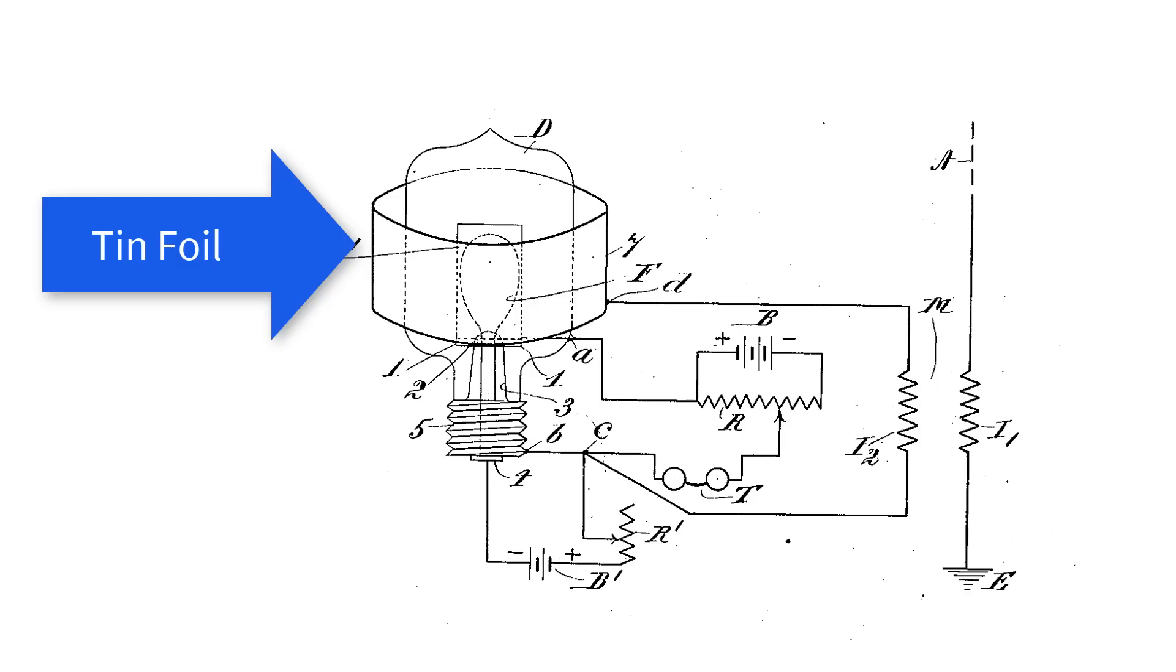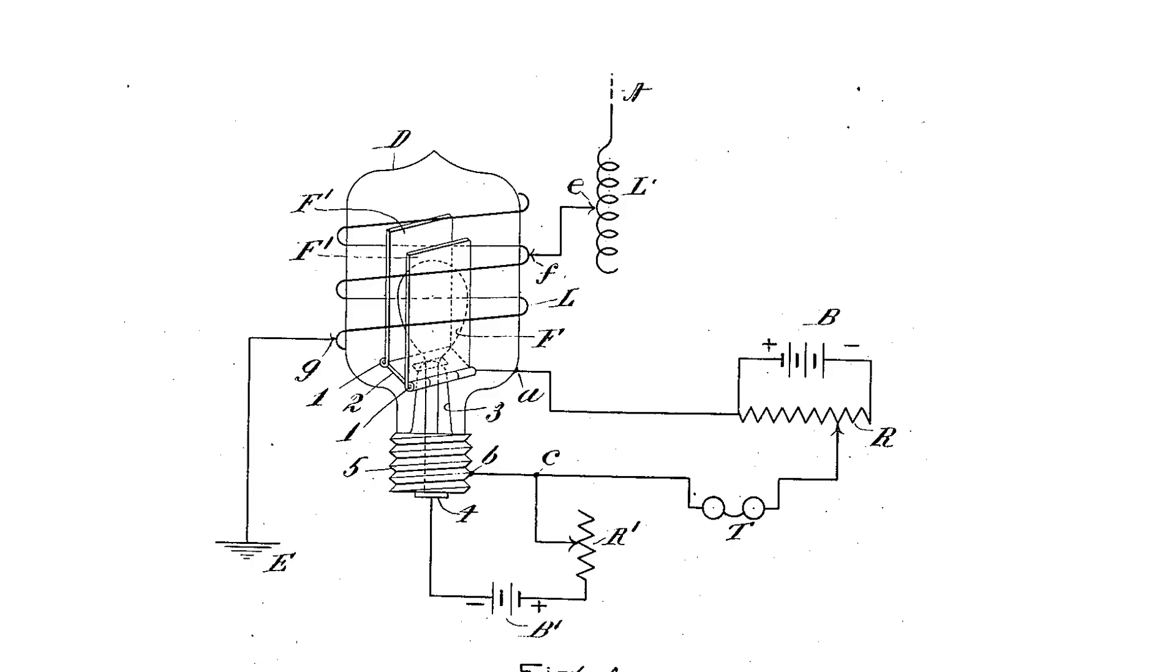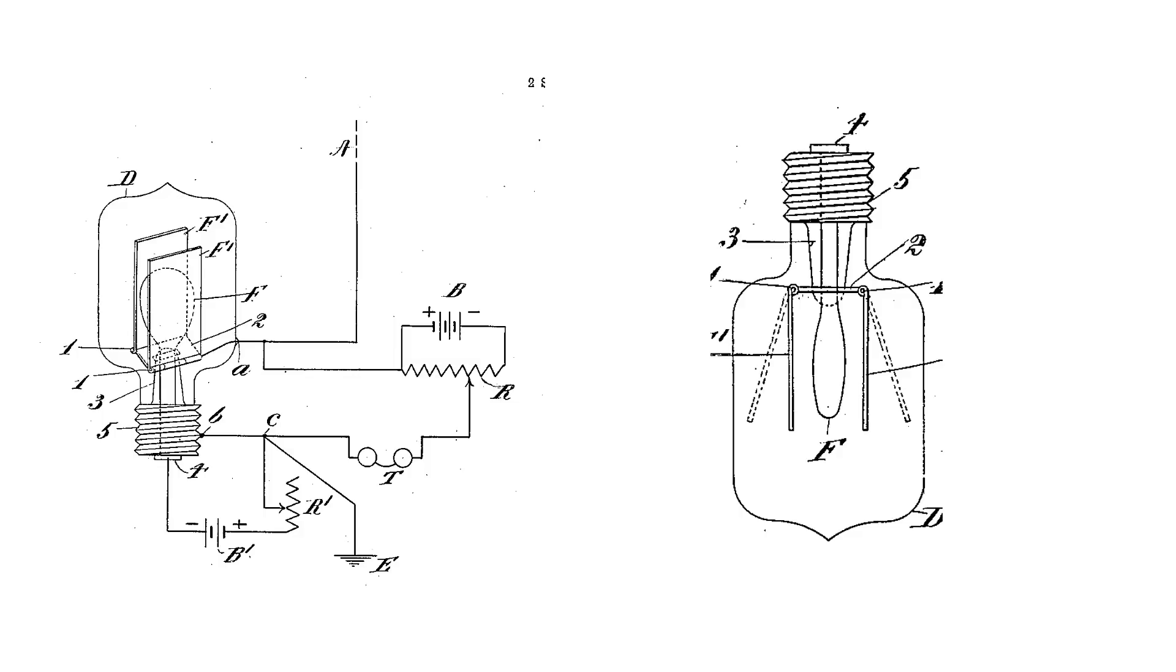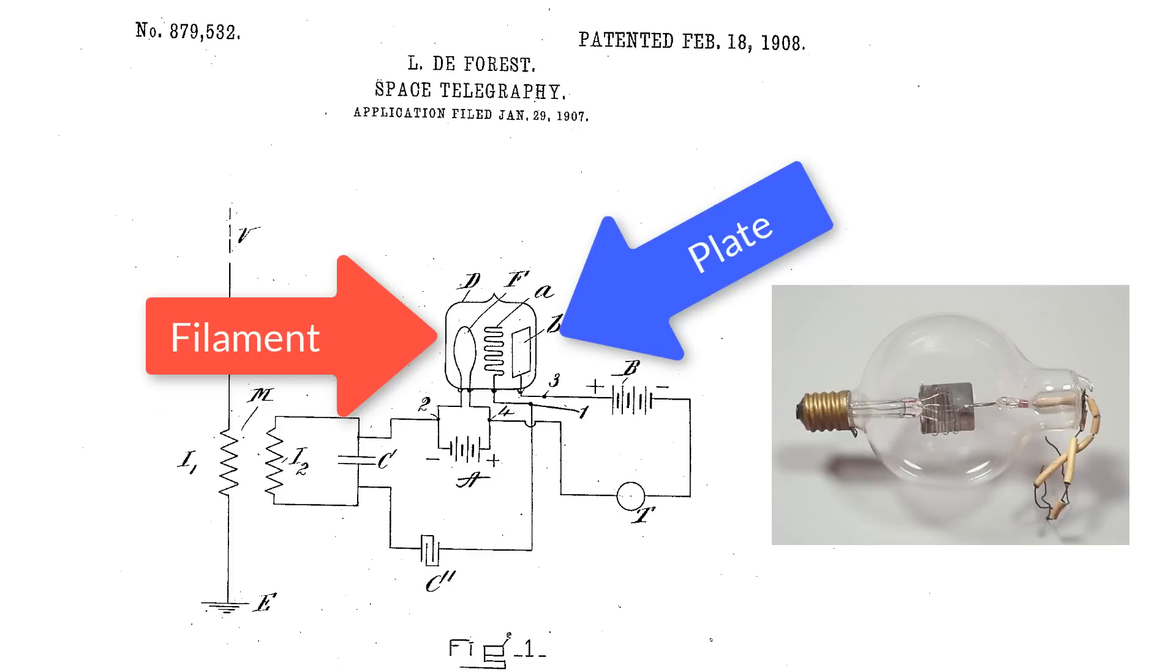Not surprisingly, Fleming sued. Meanwhile, de Forest started adding pieces of metal all over the place. He wrapped his valve in tin foil. He circled the outside of it with wire. He had multiple connected plates inside the bulb. Then on Christmas day of 1906, de Forest ordered the bulb with three connections: the filament, the plate, and between them, a wire that was bent into a zigzag shape that he called a grid.